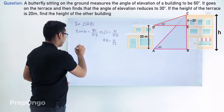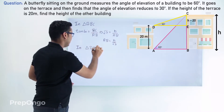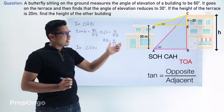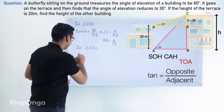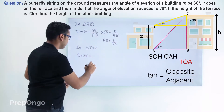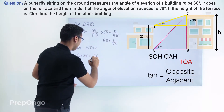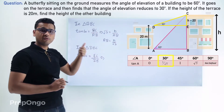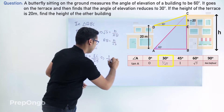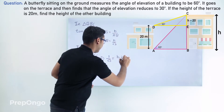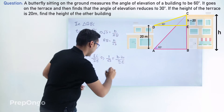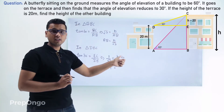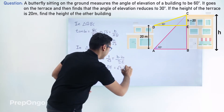Now let's apply trigonometric ratios in triangle DEC. We have to find H minus 20 in terms of the common side, so we apply tan again. Tan of 30 degrees equals EC upon DE, which gives 1 by root 3 equals H minus 20 upon DE. Cross multiplying, DE equals root 3 times (H minus 20).